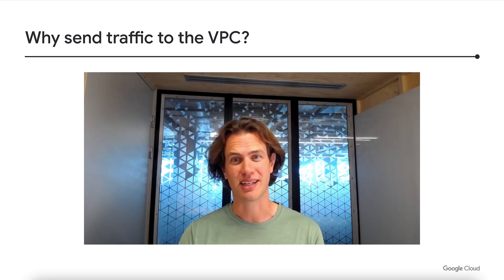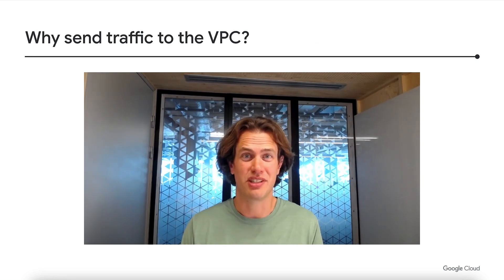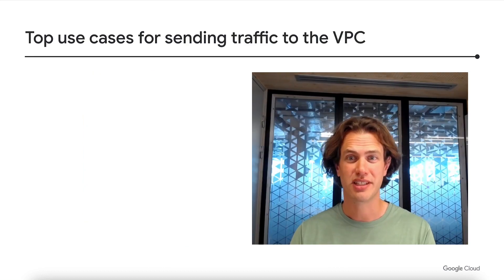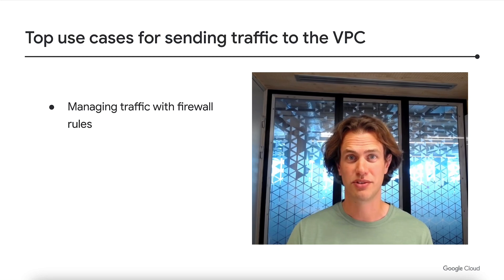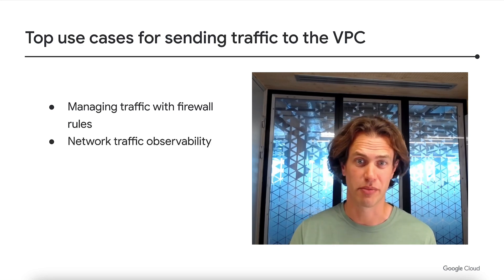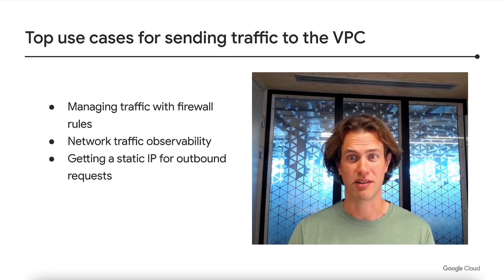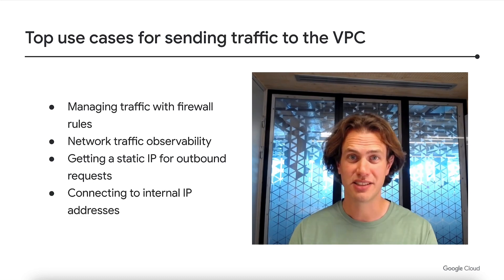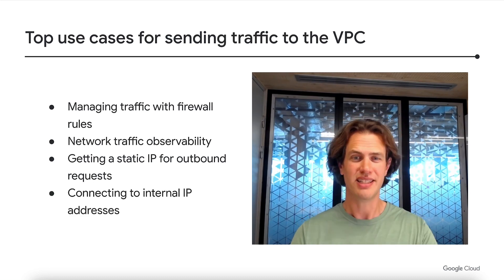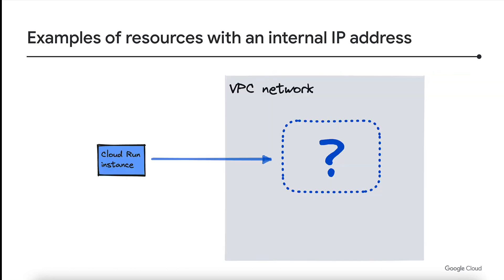But let's take a step back. Why send traffic to the VPC in the first place? Top use cases for sending traffic to the VPC include managing traffic with firewall rules, network traffic observability, getting static IPs for outbound requests, and connecting to internal IP addresses — and that's the most common one. Here are some examples of resources with an internal IP address that you might want to connect to from Cloud Run.